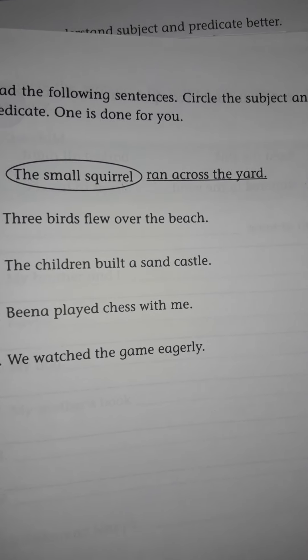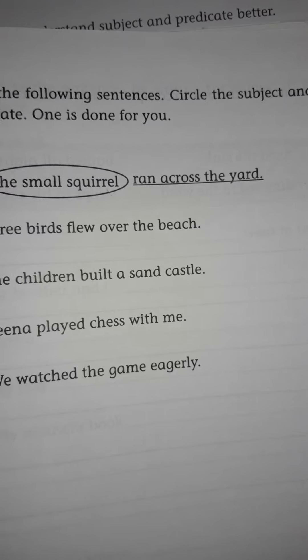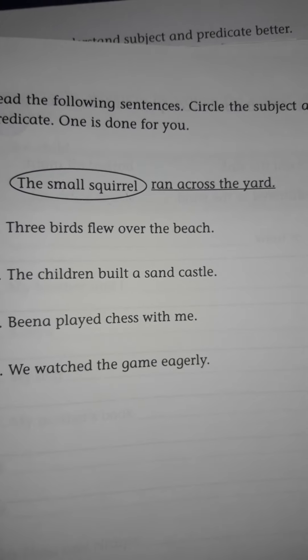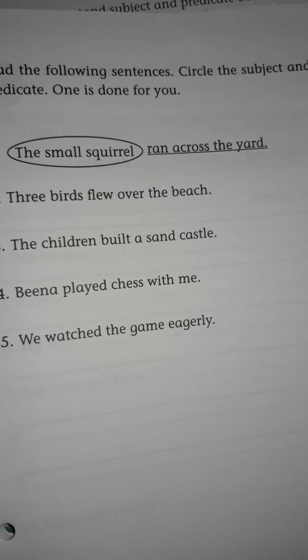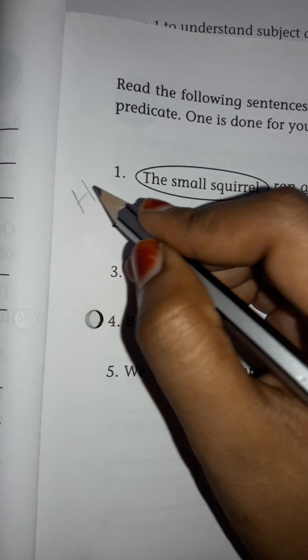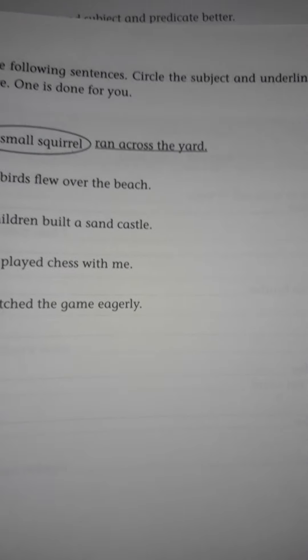From the verb onwards — 'ran across the yard' — the remaining part is the predicate. Remember, the predicate always starts with a verb. If you ask a question to the sentence, the answer will be the subject. Circle the subjects and underline the predicates for the following sentences. Do this as homework. We will go with the textual exercises in our next class. Thank you so much, have a nice day.